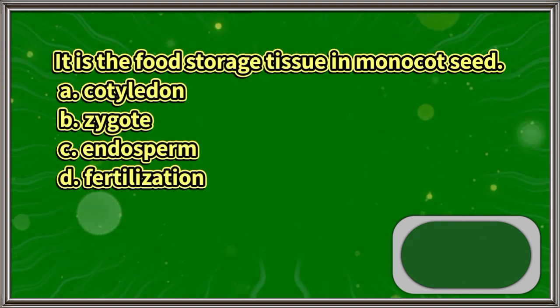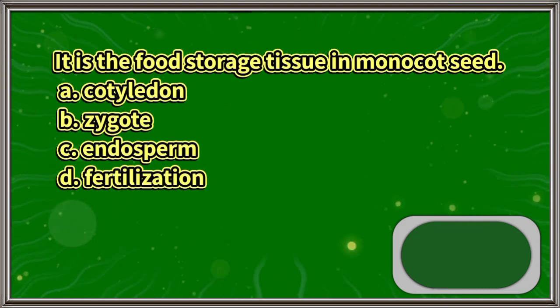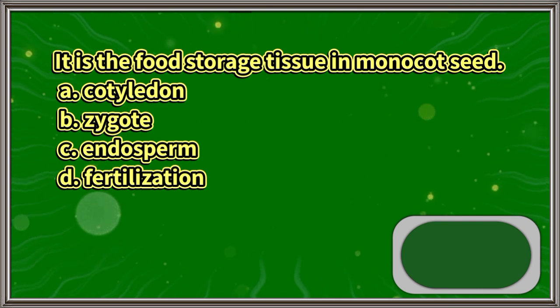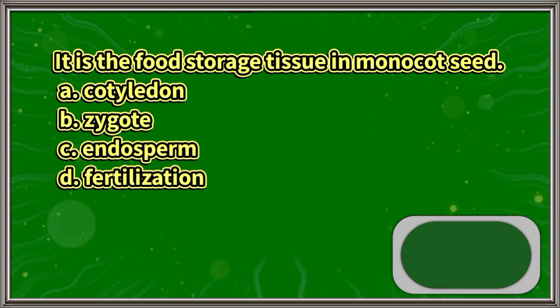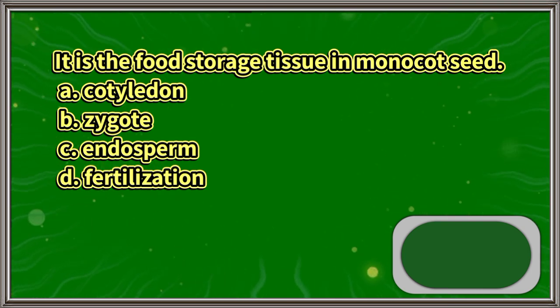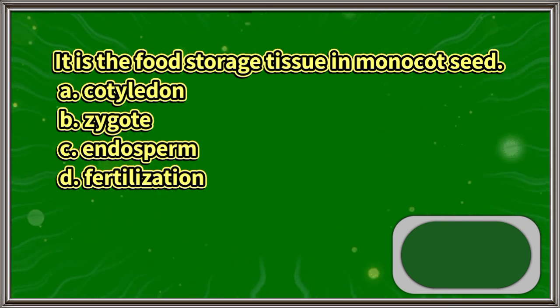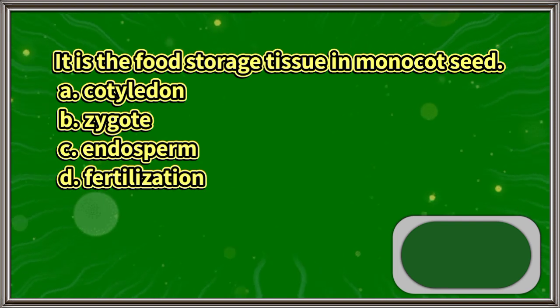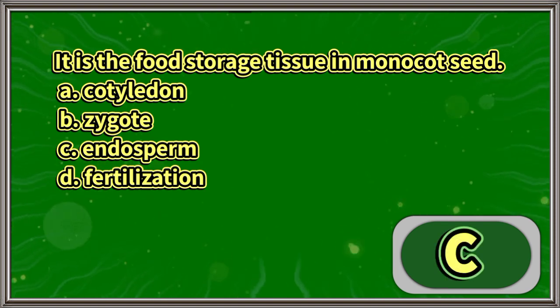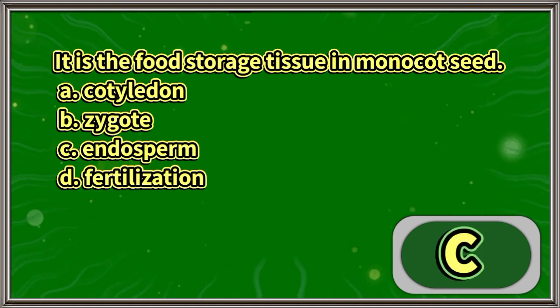It is the food storage tissue in monocot seed. A. Cotyledon. B. Zygote. C. Endosperm. D. Fertilization. The answer is letter C.